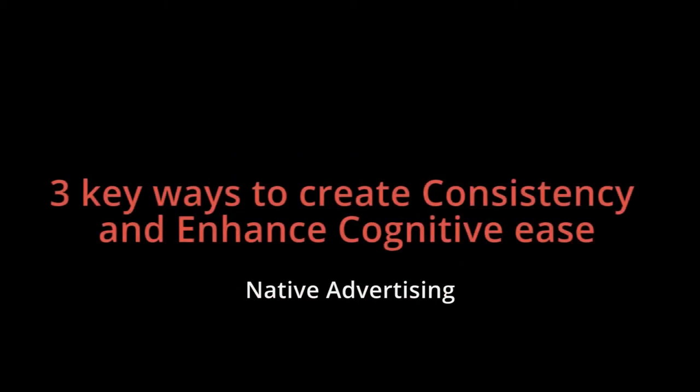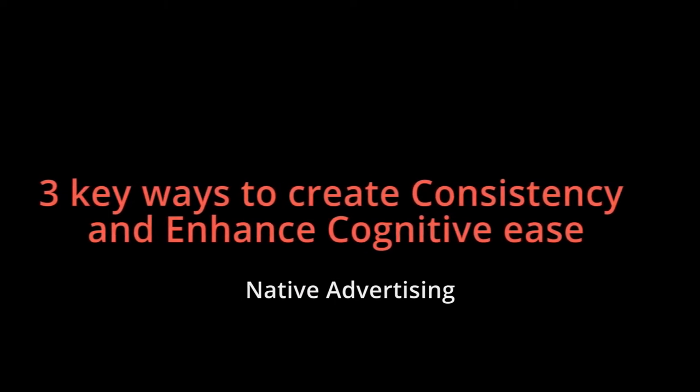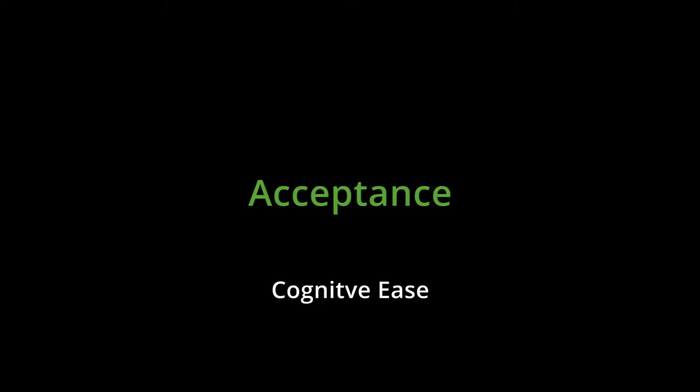So in native advertising, it's no different. There are three key ways to create good native advertising and enhance cognitive ease. Cognitive ease is that feeling of acceptance, that feeling that you can look at something and it just feels right — it just fits together. And that's what we want, because if a viewer comes to our native ads and they look out of place, their spidey senses are going to tingle. They're going to feel as if someone's just trying to flog them something, or the information is not accurate, not good, or it's fake, poor quality information. So there are three ways that we can enhance this cognitive ease.